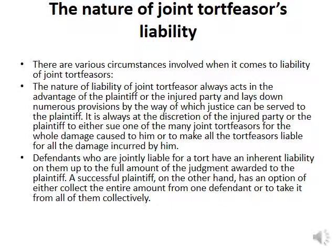If C takes damages from A and B together, they would contribute proportionately — if they did the wrong 50-50 percent, then 50-50 would be the contribution; if 60-40, then 60-40 would be the contribution. But if C takes the whole compensation from A alone, then it is A's duty to have B compensate him, because the plaintiff is now out of the picture. Between the two joint tortfeasors, the one who has paid more than his share — A — would be compensated by the other joint tortfeasor, B.